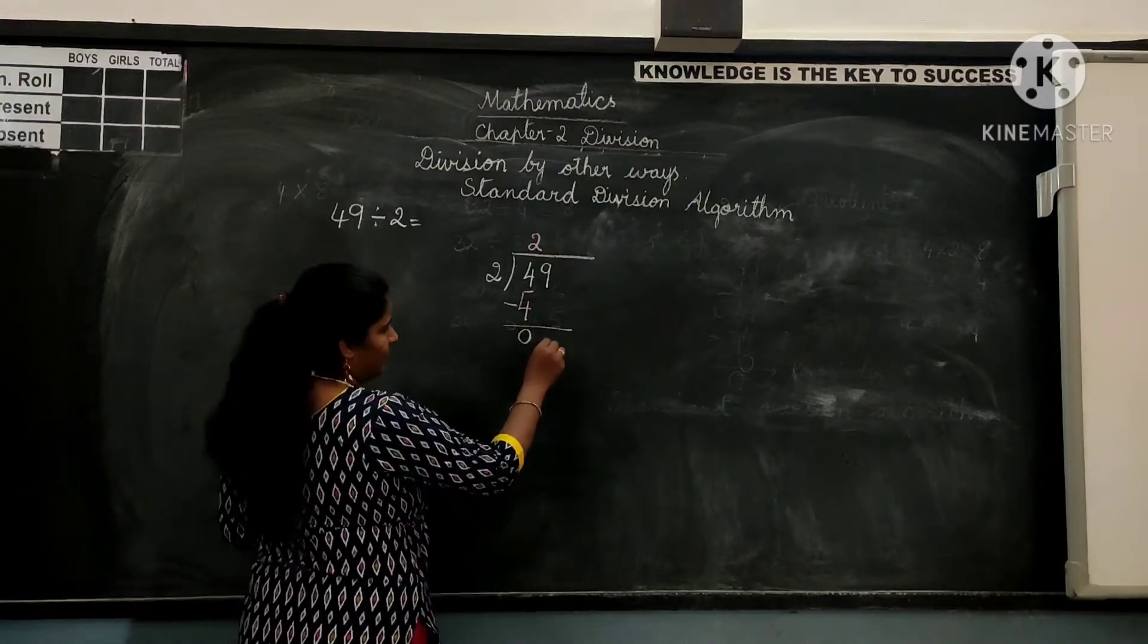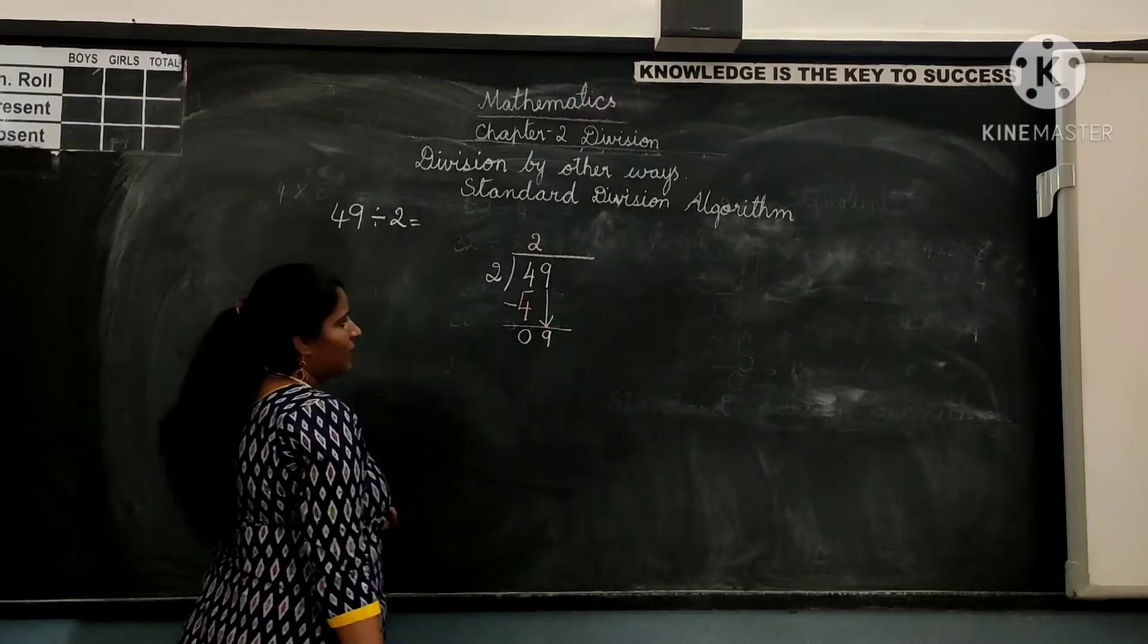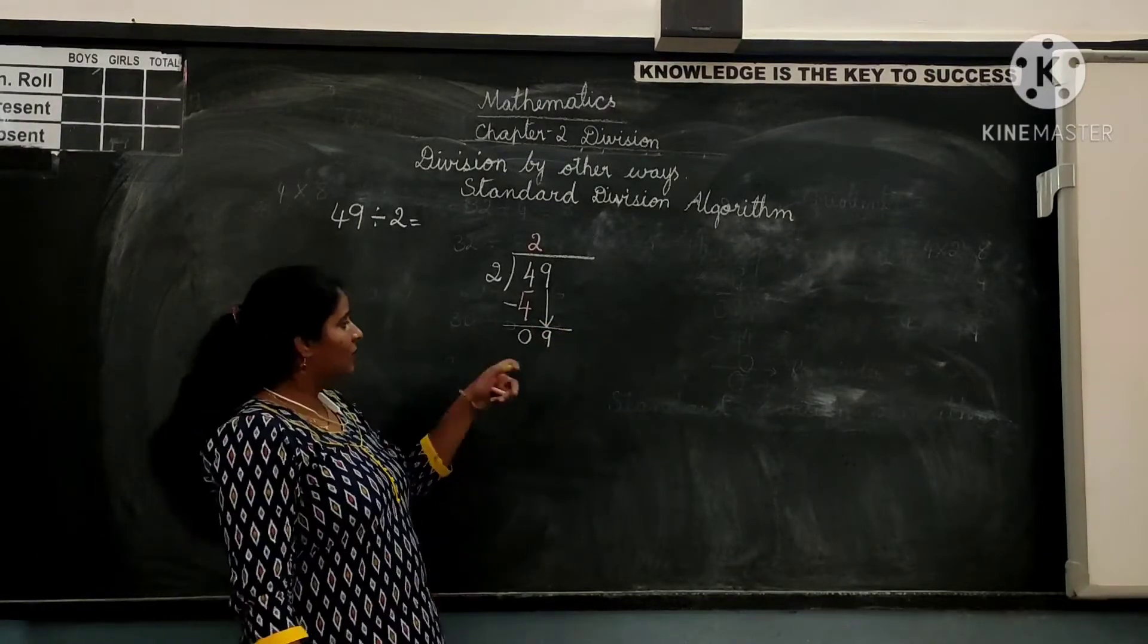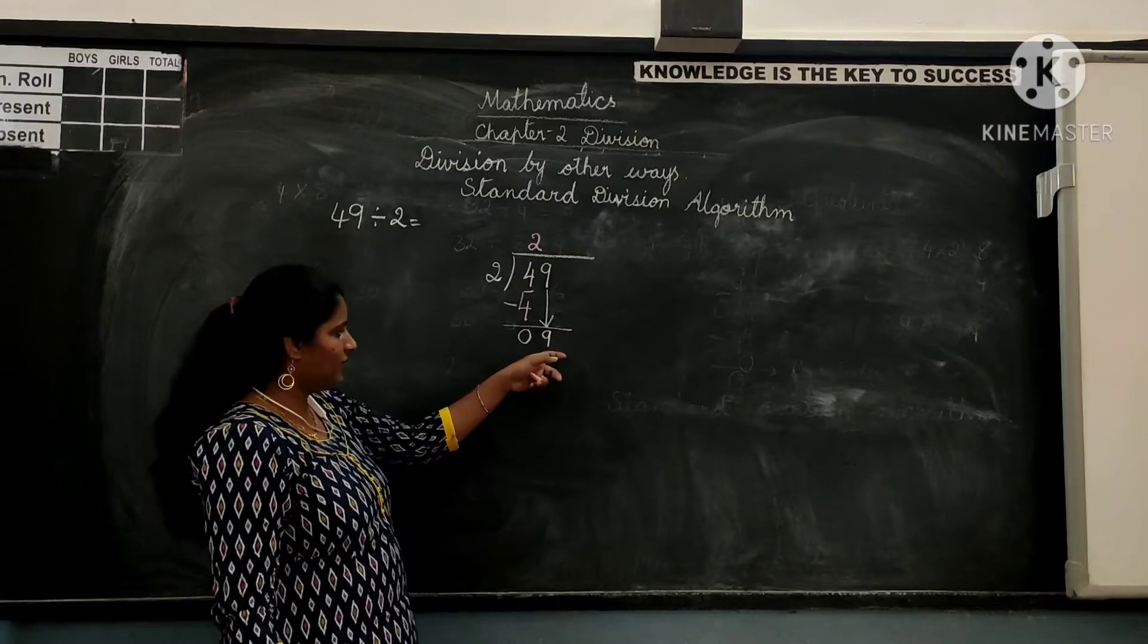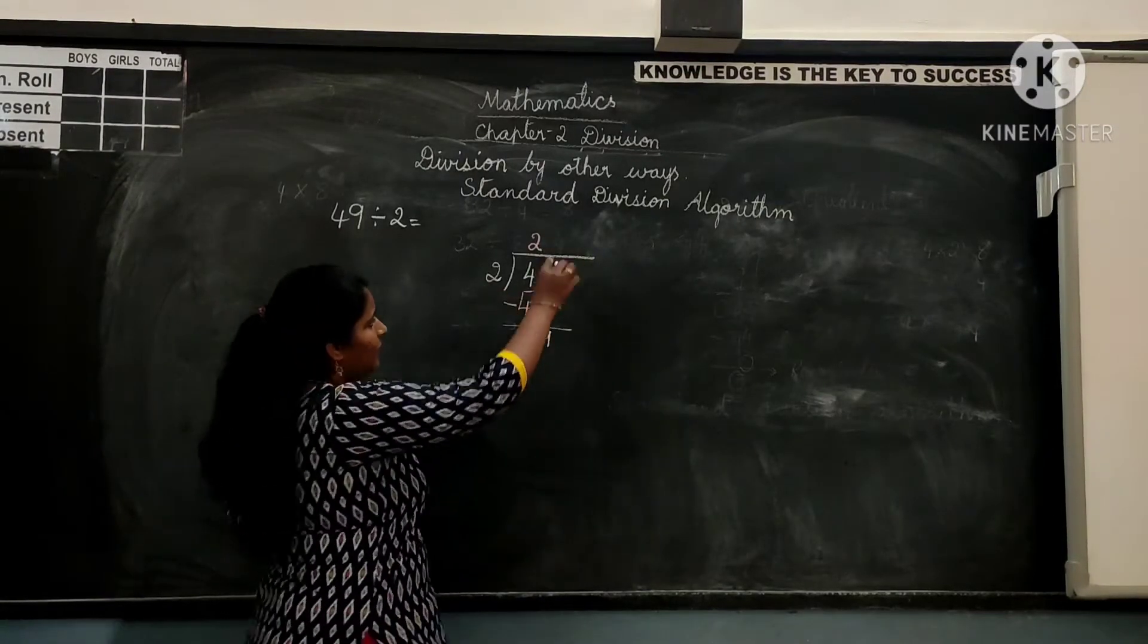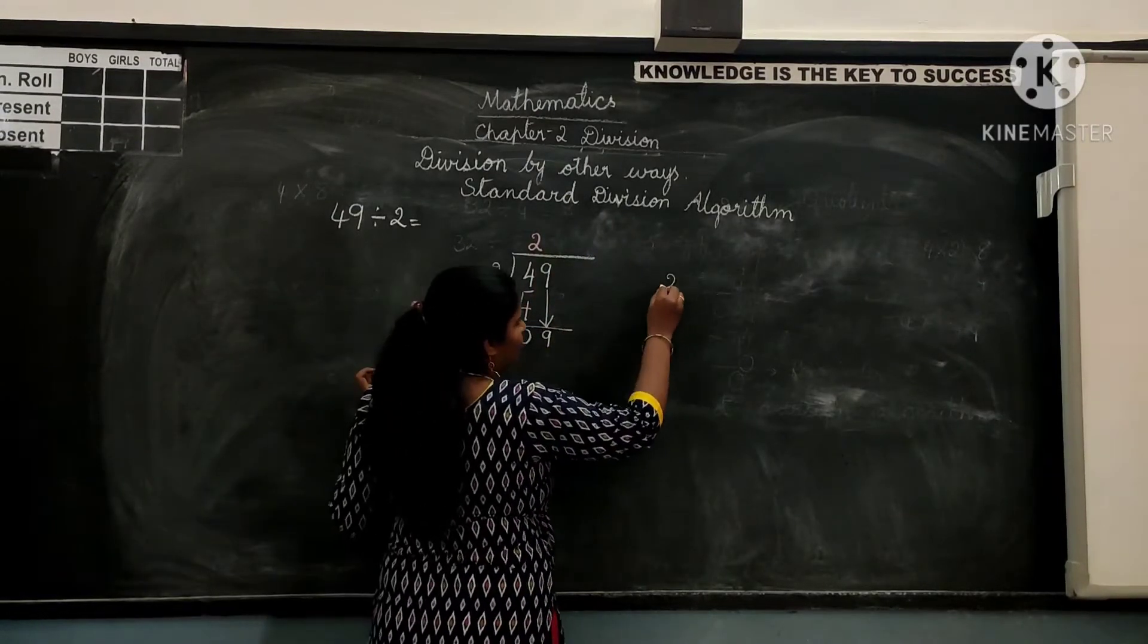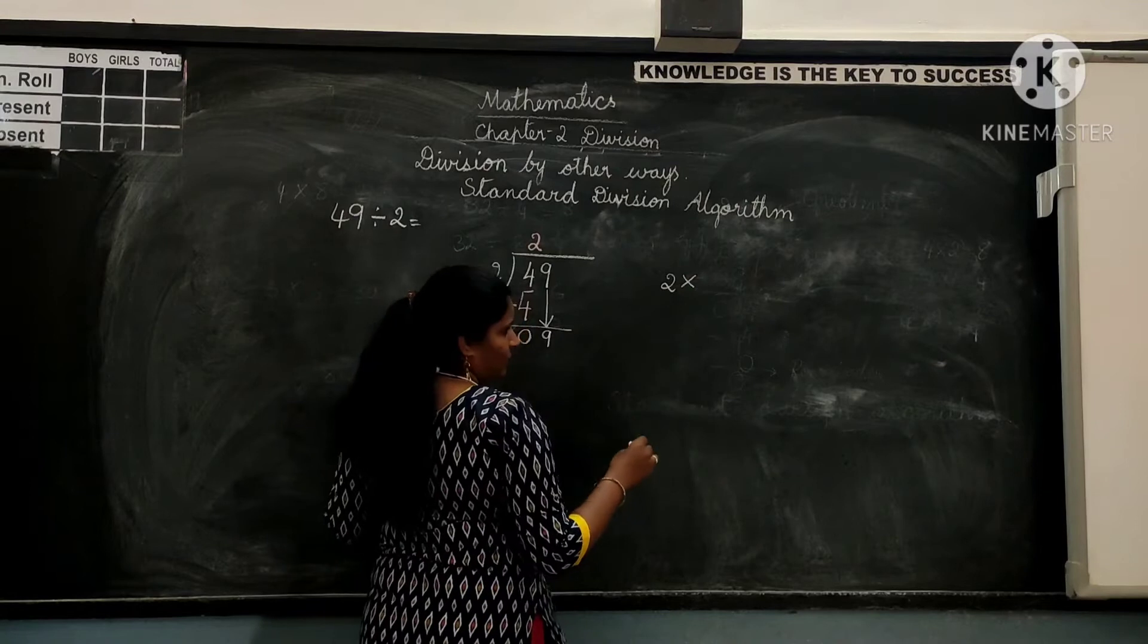We have no number here. Get 9 down from unit space. Now divide 9 by 2. So here 9 is the dividend now. So 2, how many times give you 10? We know that. What is the table of 2?